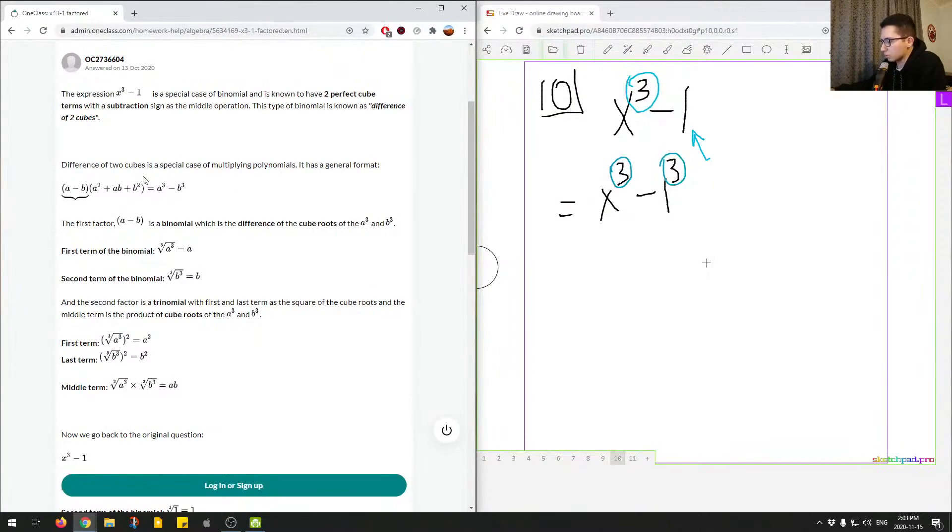So, this is the general format, so I'll write this down here. I'll write this in a different color, in green. So, if we had a cubed minus b cubed, so any two variables, any two numbers, a variable and a number, we end up with this format: a minus b times a squared plus ab plus b squared.